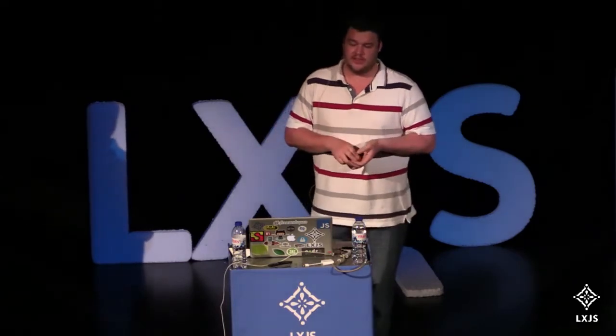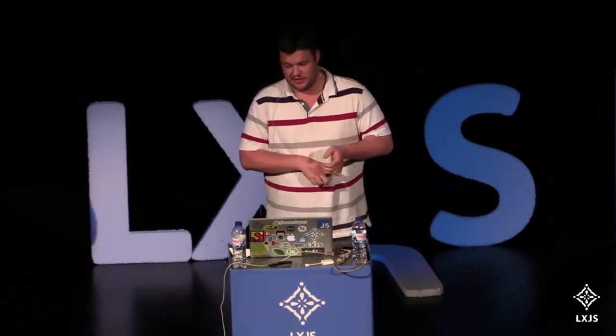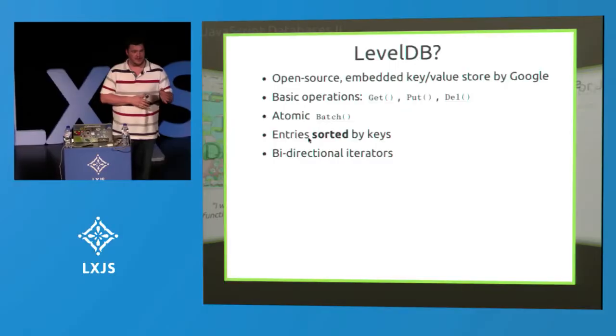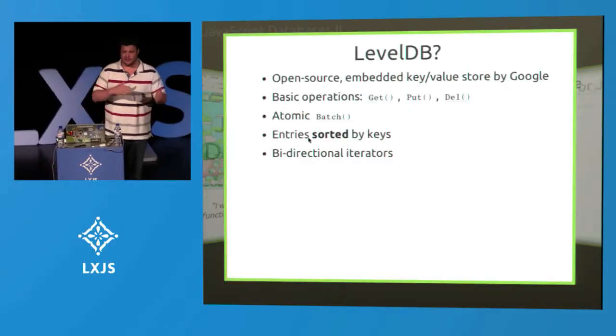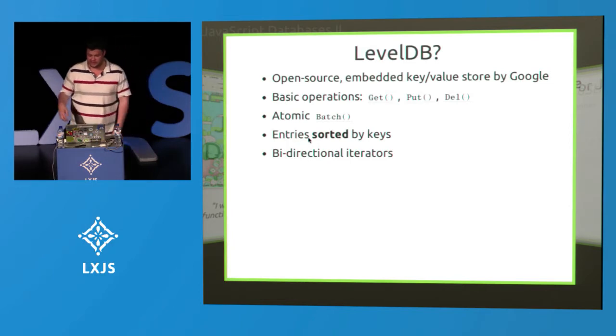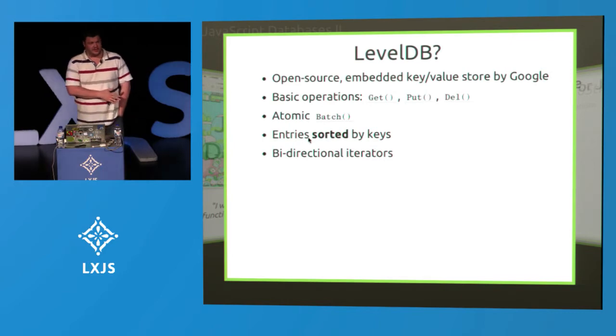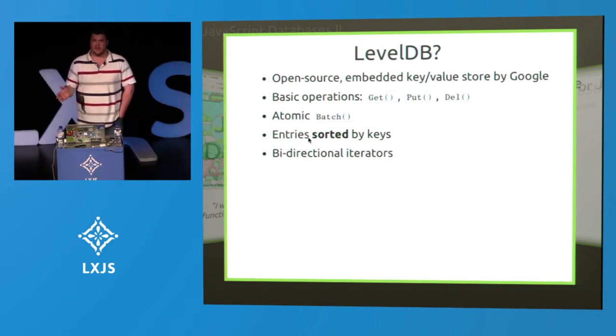Its basic operations are get, put, and delete. It has an atomic batch. Its entries are sorted by keys, which is extremely important. And it has these bidirectional iterators, so you can go from any point in the database forward and backward to search for things. And because it's sorted, this is actually quite useful. So LevelDB has served as the foundation for the work that we've been doing in JavaScript databases so far.